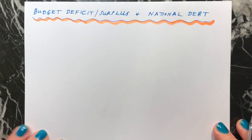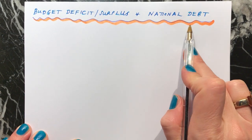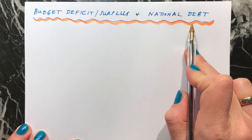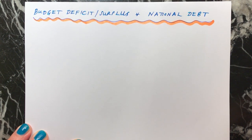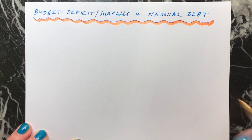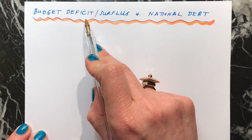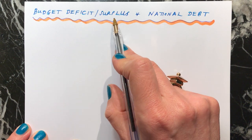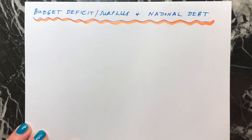Hi everyone. Now we're going to look at these two definitions and the difference between them. In many articles, the data you'll get in the exam, and in newspapers, you read about the budget deficit sometimes, very rarely a budget surplus, and you'll also read about national debt.